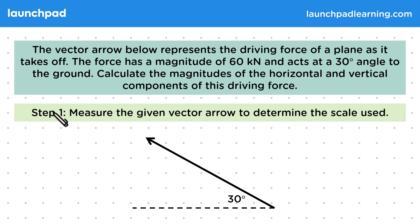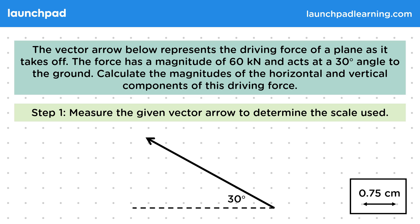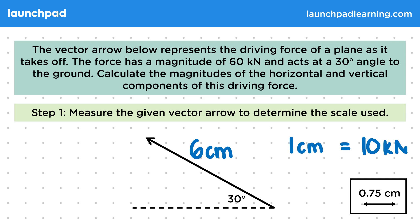For step 1, we want to measure the given vector arrow to determine the scale used. When there are 0.75 cm between the dots, the vector arrow is measured to be 6 cm. Therefore, 1 cm is equal to 10 kN.